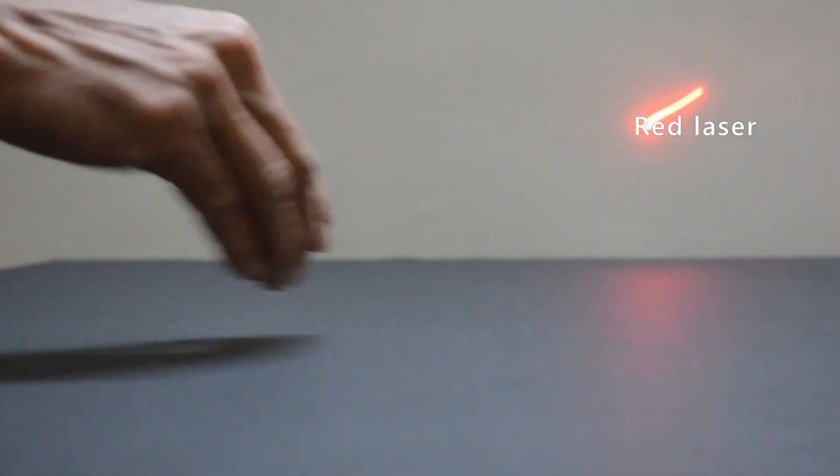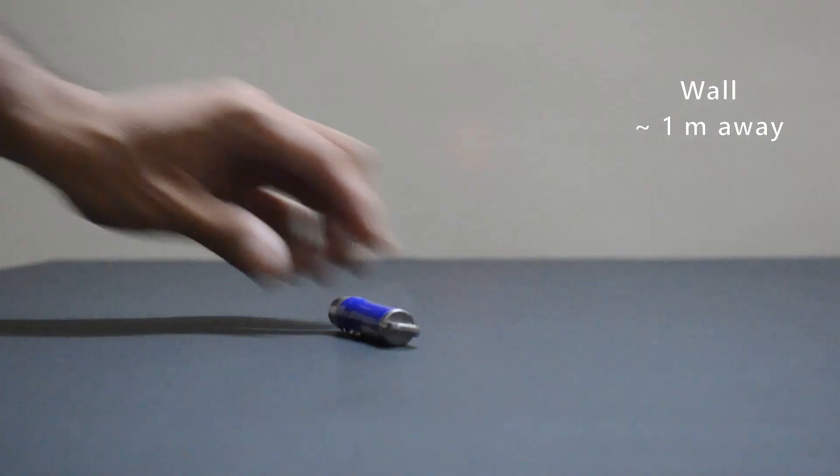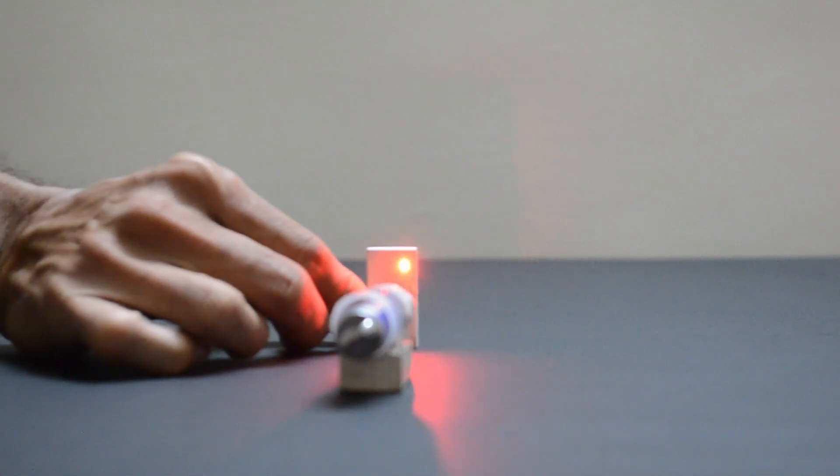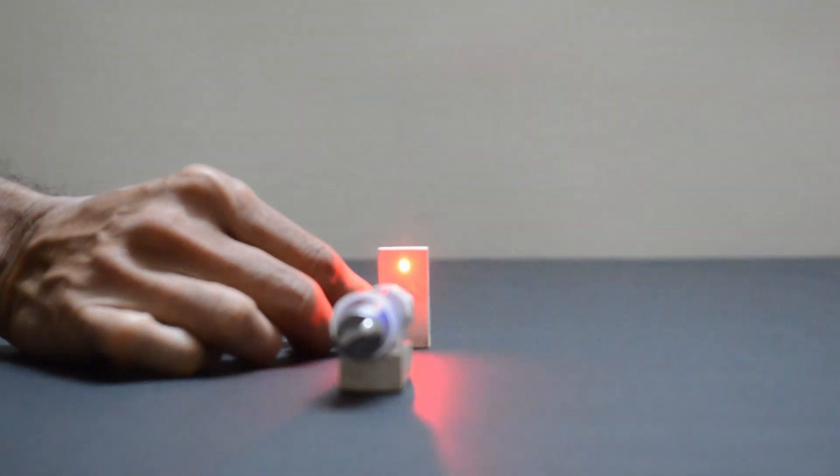We will project this red laser light on the wall. An eraser, when placed in the path of light, blocks it completely.